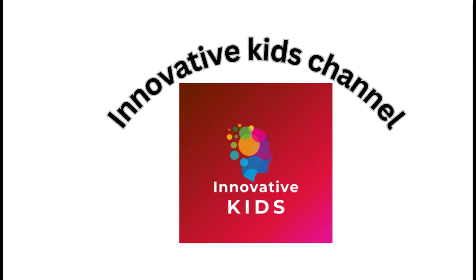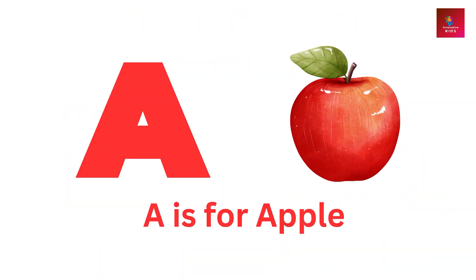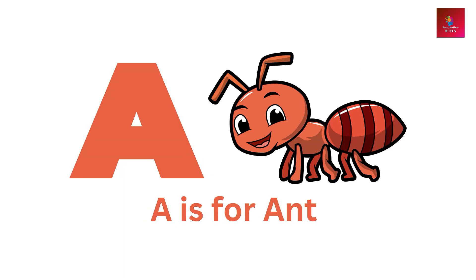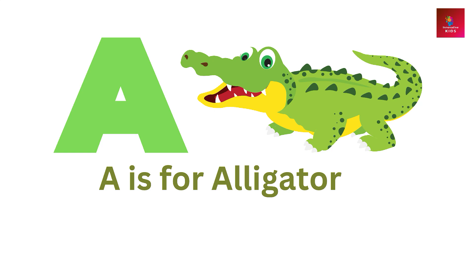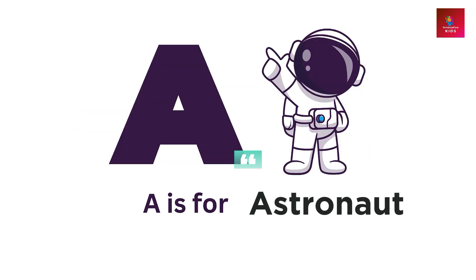Innovative Kids Channel. Alphabet A — 20 words vocabulary for kids. A is for apple. A is for ant. A is for alligator. A is for airplane.